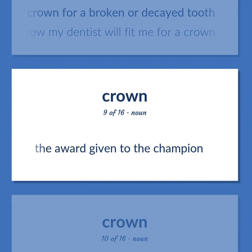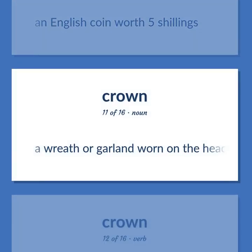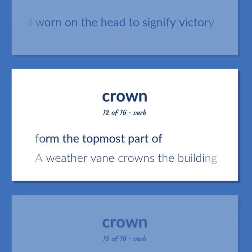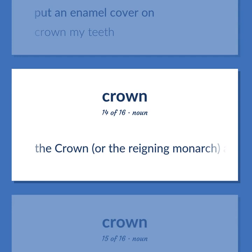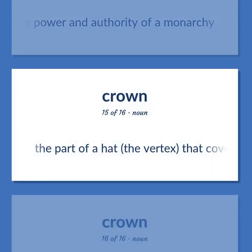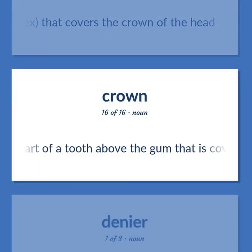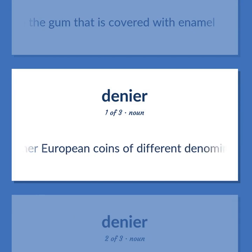The award given to the champion. An English coin worth five shillings. A wreath or garland worn on the head to signify victory. Form the topmost part of — a weather vane crowns the building. Put an enamel cover on — crown my teeth. The crown, or the reigning monarch, as the symbol of the power and authority of a monarchy. The part of the hat — the vertex — that covers the crown of the head. The part of a tooth above the gum that is covered with enamel.